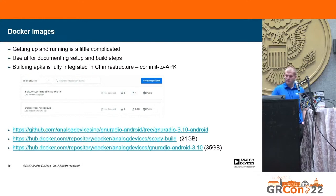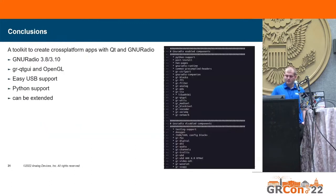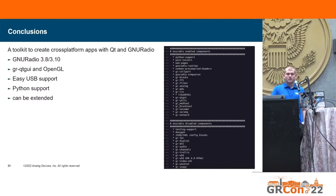You have links for the Docker images and the repositories. We can use Qt to reliably create cross-platform applications, including on Android, and with this approach you don't need to write much Java code — in some cases not even much C++ code, you just use the companion. On top of previous work, we added support for GNU Radio 3.10, implemented OpenGL in GRQT GUI, and added Python support. Most importantly, this project can be extended by adding more libraries and modules to the Docker image. It was a very interesting project — I learned a lot about Android, cross-compiling, and in some particular cases, a lot about myself.